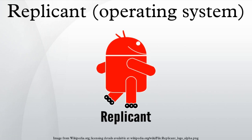In November 2013, it was announced that Replicant could work on a Fairphone device and that the boot loaders may even be free software. The Fairphone team seemed interested in helping to get Replicant ported to the device. However, in December 2014, Fairphone admitted that it had failed to convince chipset vendor Mediatek to open up the source code for first generation Fairphones.